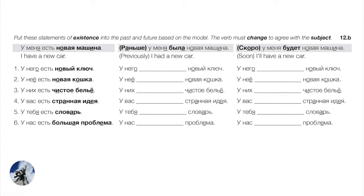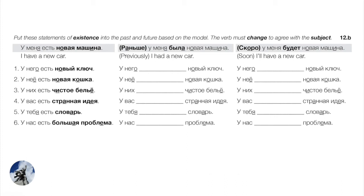Number one: У него есть новый ключ — he has a new key. Past: У него был новый ключ. Future: У него будет новый ключ. Number two: У него есть новая кошка — she has a new cat. Past: У него была новая кошка — note была for the feminine subject кошка. Future: У него будет новая кошка.